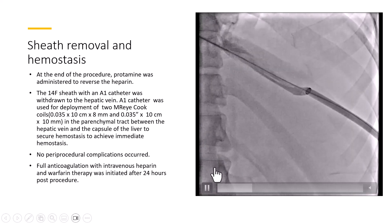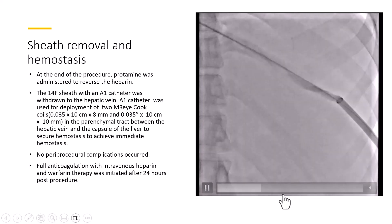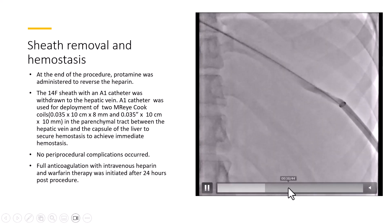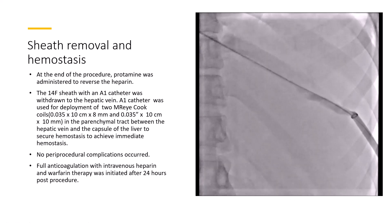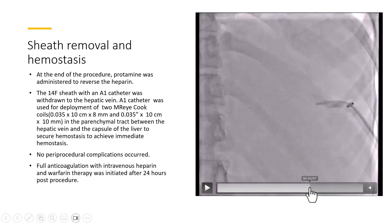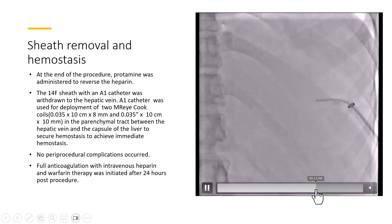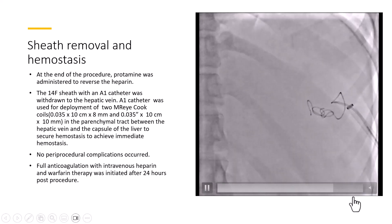As you can see in the video, no periprocedural complications occurred. Full anticoagulation with IV heparin and warfarin was initiated 24 hours after the procedure. You can see the coils delivered in the branch of the liver through the Agilis catheter, and then the sheath was withdrawn.